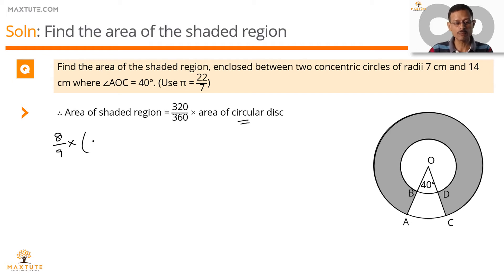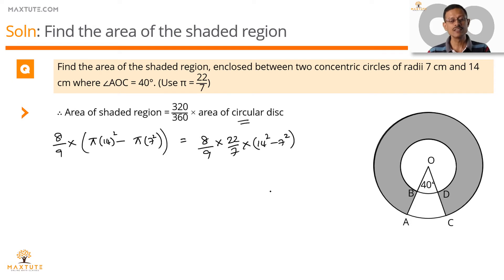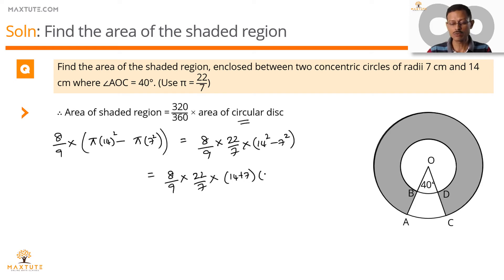The area of the circular disk is pi into 14 squared minus pi into 7 squared. This is equal to 8 by 9. Taking pi common from both terms and writing pi as 22 by 7, we are left with 14 squared minus 7 squared. This resembles a squared minus b squared, which equals a plus b into a minus b. So this becomes 8 by 9 into 22 by 7 into 14 plus 7 into 14 minus 7, which is 8 by 9 into 22 by 7 into 21 into 7.